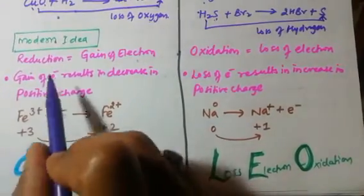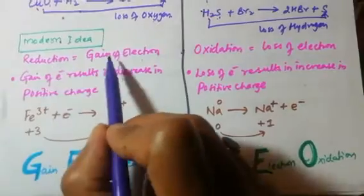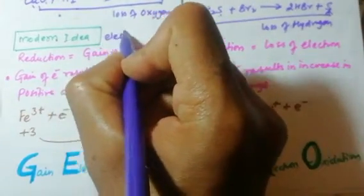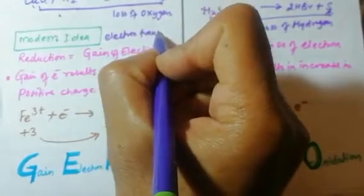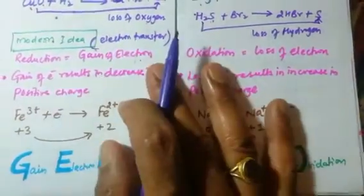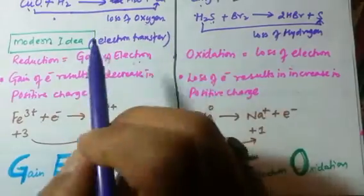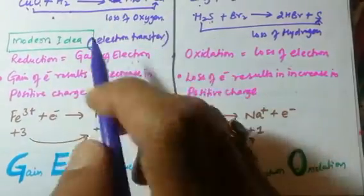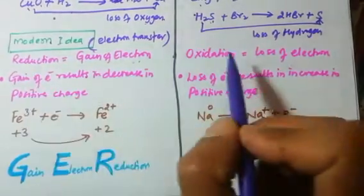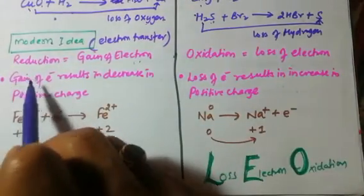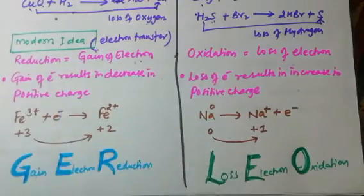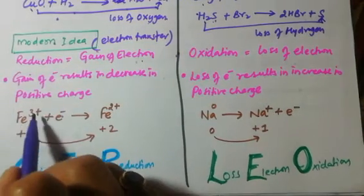According to the modern idea, reduction is the gain of electrons. Modern idea is based on electron transfer. We are not talking about oxygen and hydrogen only — we are talking about electrons. So gain of electron is reduction and loss of electron is oxidation.